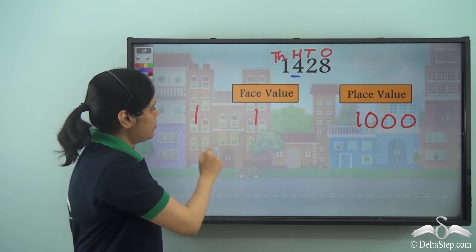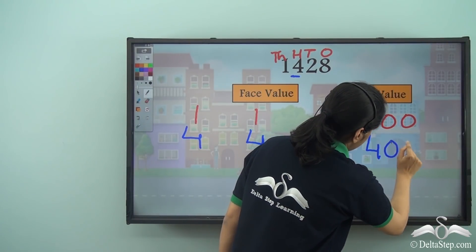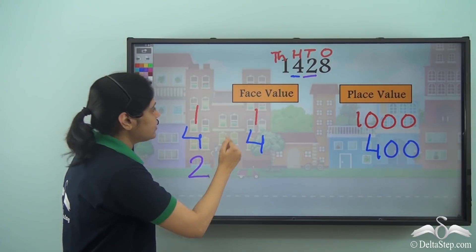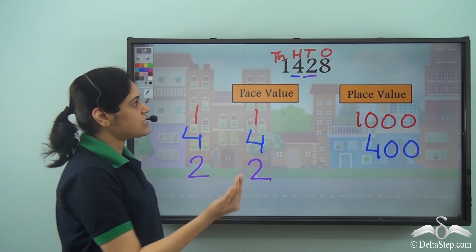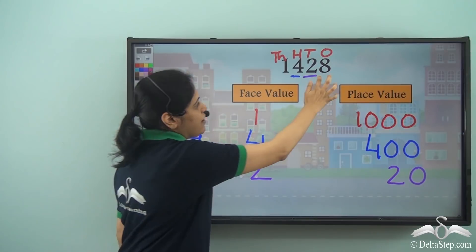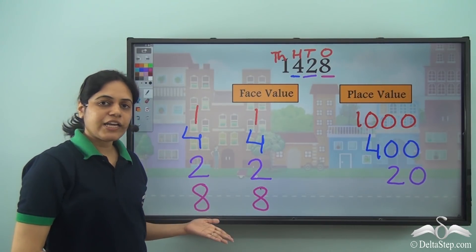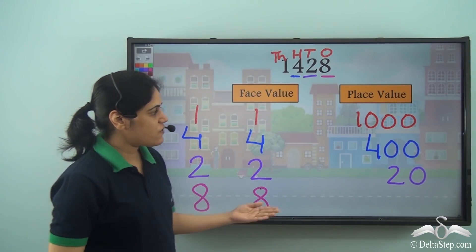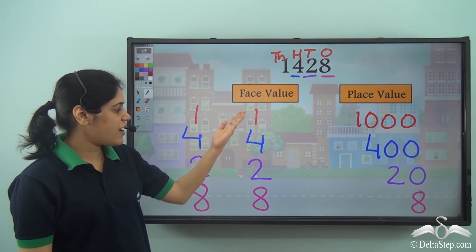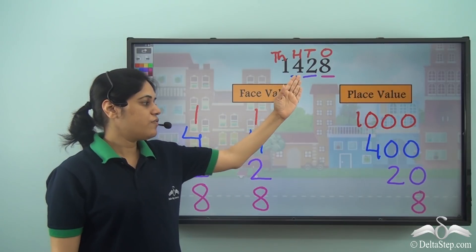Let me take 4 now. The face value of 4 is 4. 4 hundreds means the place value is 400. Next digit is 2. For 2, the face value is the digit itself, which is 2, and the place value means 2 tens, which is 20. And then I have 8 as the ones digit. The face value of 8 is 8, and for a digit in the ones place, the face value and place value are the same. So the place value of 8 is also 8.